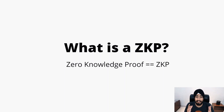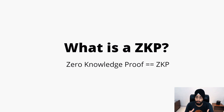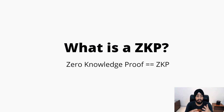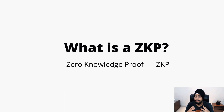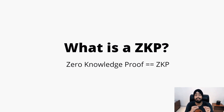So what is ZKP? ZKP stands for zero knowledge proof. Let's break down these three terms: zero, knowledge, and proof. It is called zero knowledge proof because in this we are going to prove something without conveying or revealing any information. We are not going to reveal information, but we are going to give a proof.